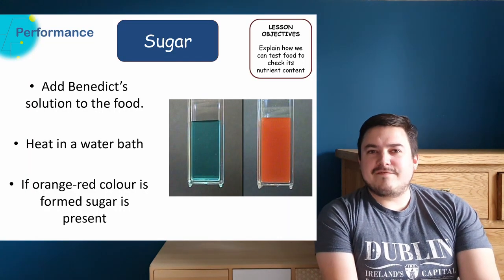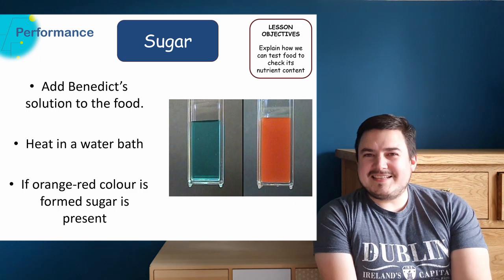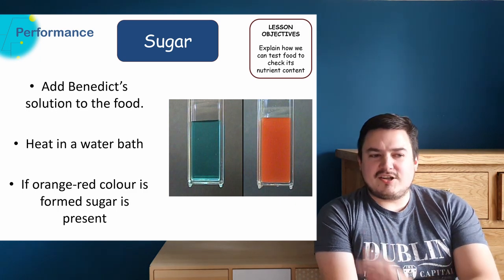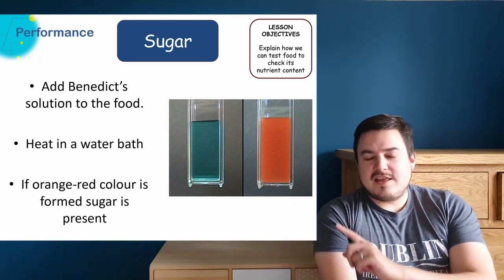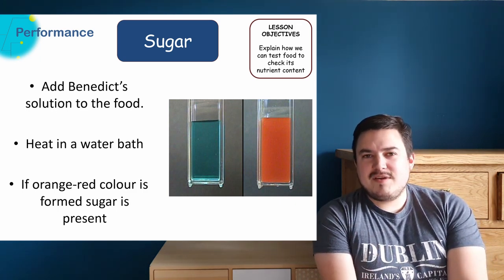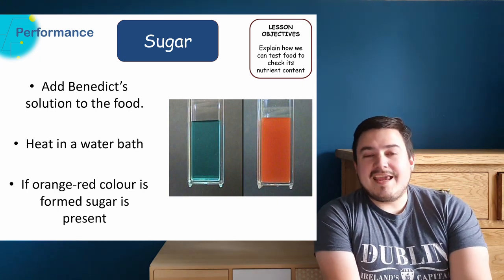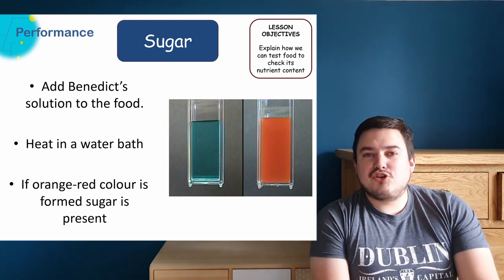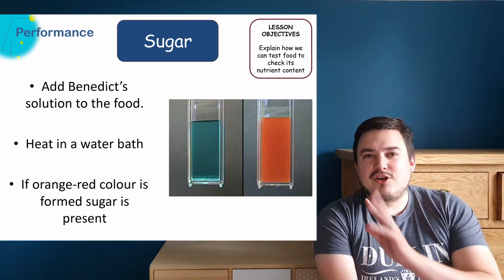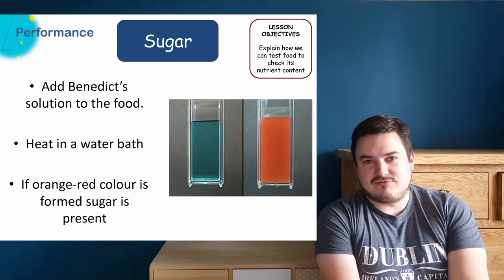Finally, if we're checking for sugars, we use Benedict's solution, which starts off the color you can see in the left-hand image. You mix it with the food and heat it in a water bath, and if sugar is present, it turns the orangey color you can see on the right of the image.